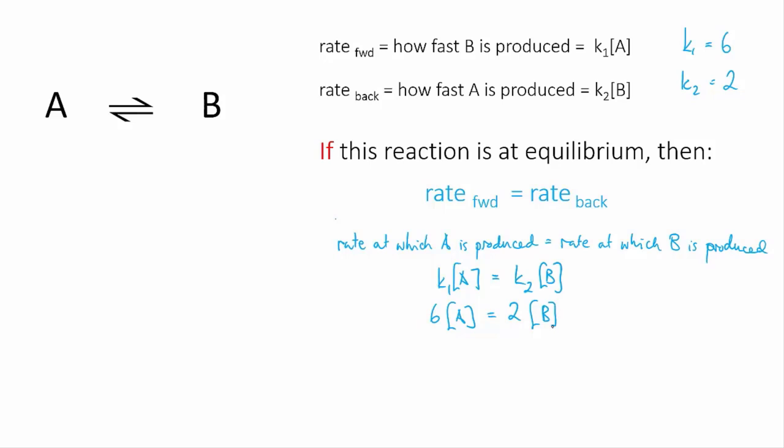Now, if the concentration of A and B are equal, that would mean that the forward reaction is faster than the reverse reaction, and that means it's not at equilibrium. 6 times 1 concentration doesn't equal 2 times the same concentration. So in order to get the rates to be equal, the concentration of B has to be higher than the concentration of A.